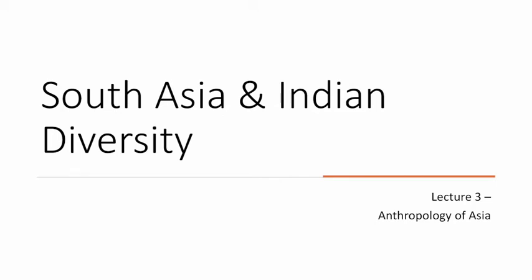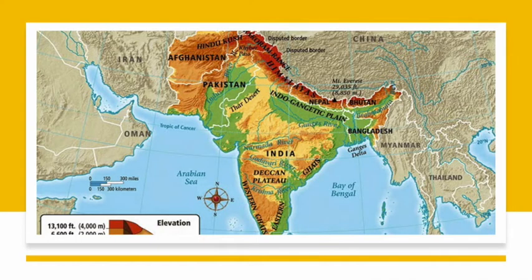Greetings, this is Lecture 3 for the Anthropology of Asia. The topic of this lecture is South Asia and Indian Diversity. In the last lecture, we started to talk about disaggregating Asia — rather than thinking about Asia as just one big simple unit, we're actually beginning to break Asia up into different regions. And as we shift now to South Asia, it's nice to take a look again at that South Asian geographic region.